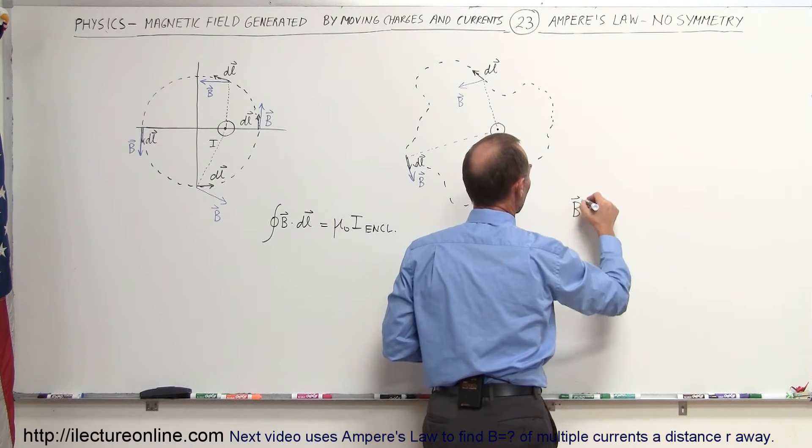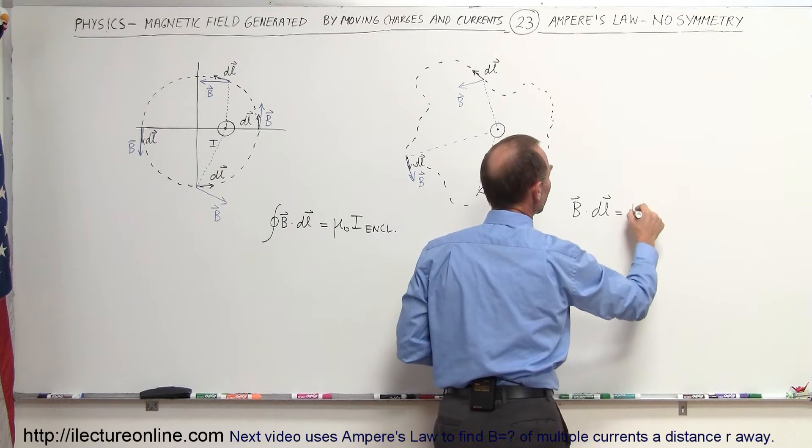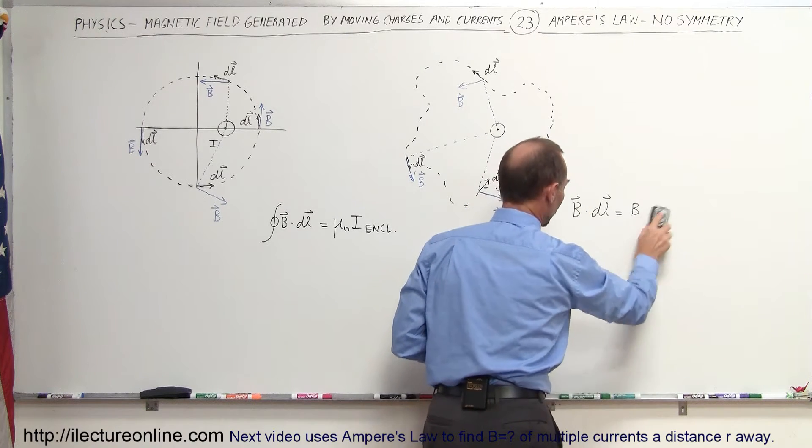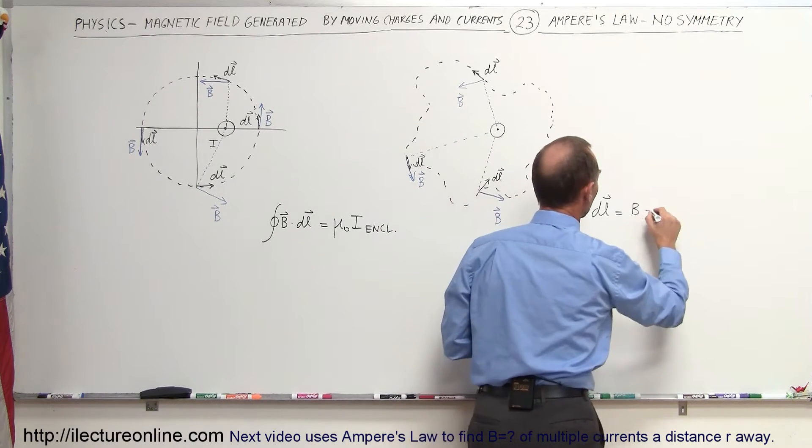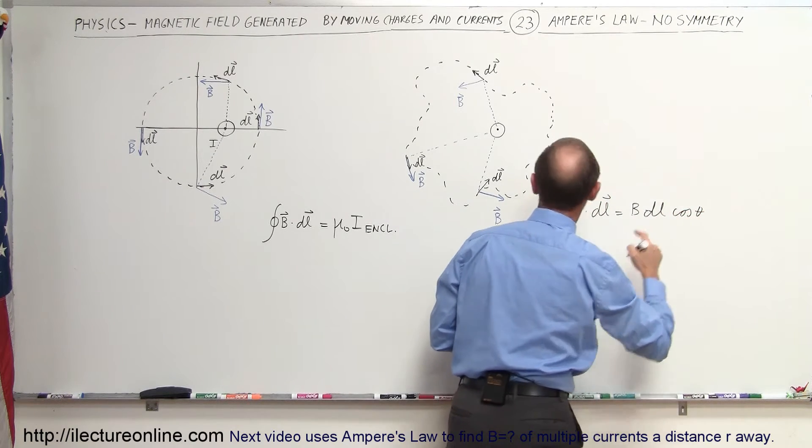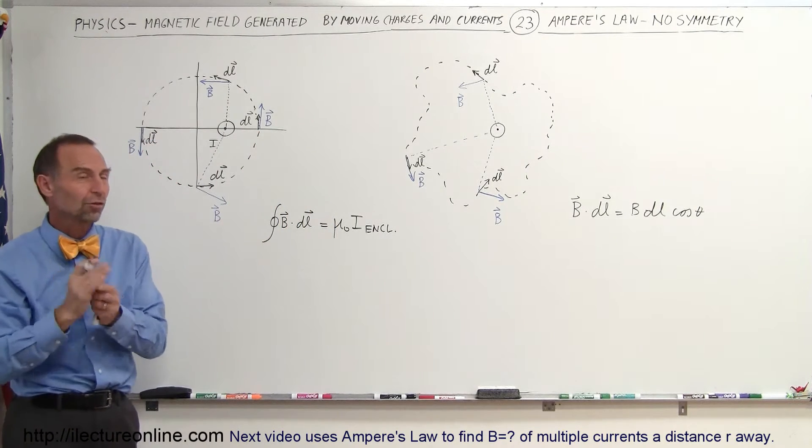The dot product of the magnetic field and the line segment is the magnitude of the B field, the length of the small segment DL, times the cosine of the angle between them. In this case, at this very location, the angle is zero, and the cosine of zero equals one.